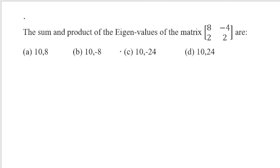Find the sum and product of eigenvalues of the given matrix. Sum = 8+2 = 10. Product = 8×2 = 16... wait, 8×2=16 and there may be an additional term making it 16+8=24. The answer is sum=10 and product=24.